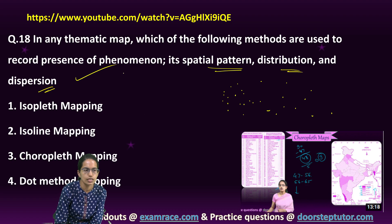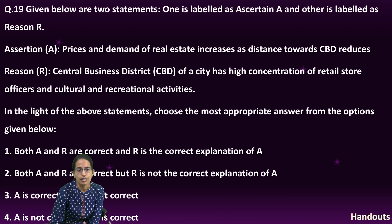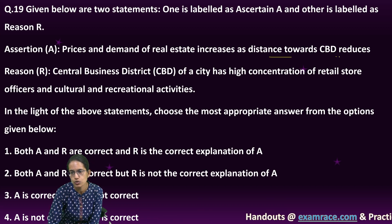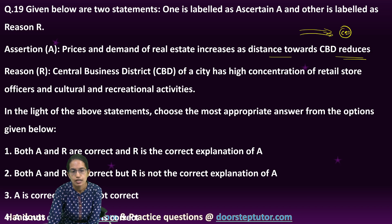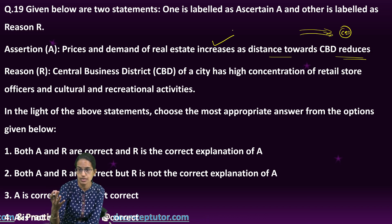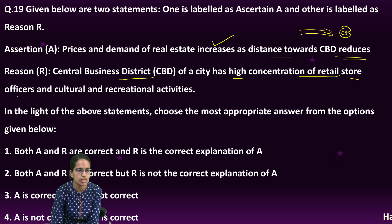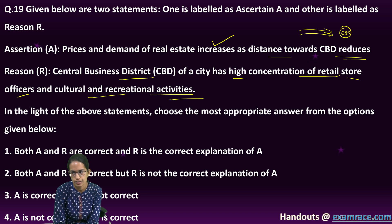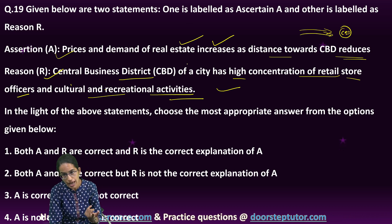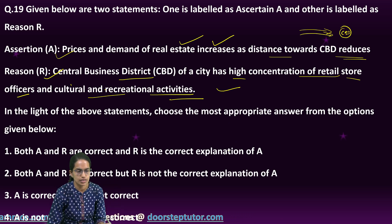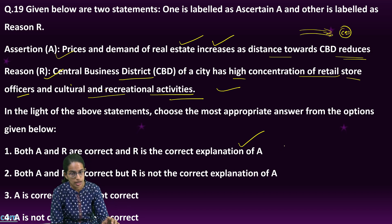All these phenomena are discussed through the dot density map. The next question: the price and demand of real estate increases as the distance towards the CBD reduces. As we come closer to the central business district, price and demand for real estate increase — city centers are the most costly. The CBD has a high concentration of retail stores and cultural and recreational activities. So both A and R are correct, and R is the correct explanation for the assertion.